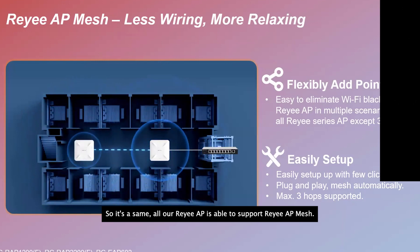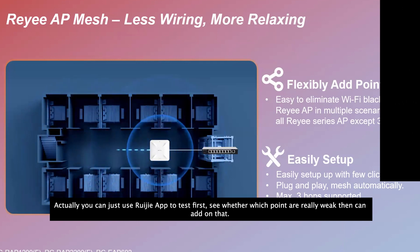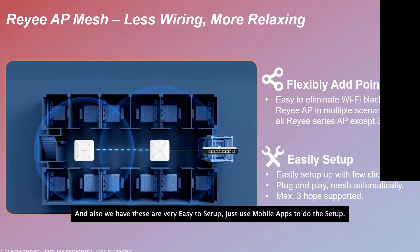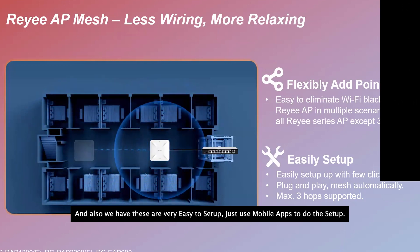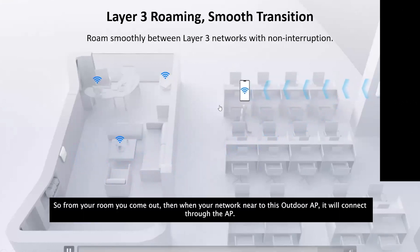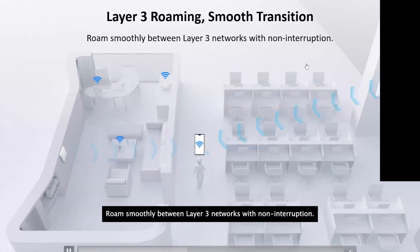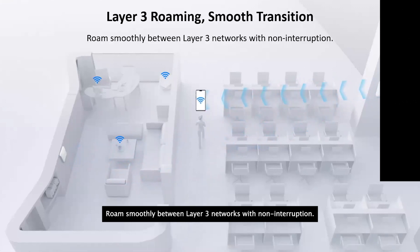All Reyee APs support an AP map feature — you can use the app to identify weak signal spots and add APs where needed. Setup is easy using the mobile app. All APs support Layer 3 roaming, so as you move from your room to an area near an outside AP, it will connect smoothly across Layer 3 networks without interruption.